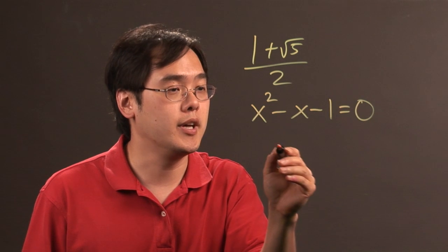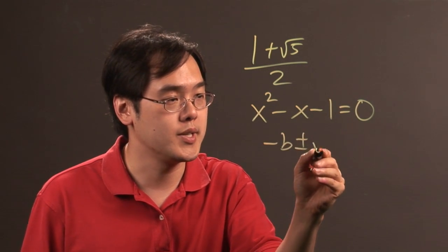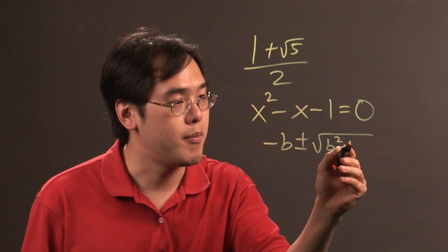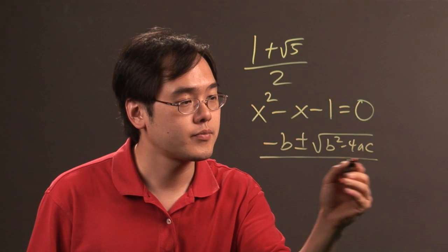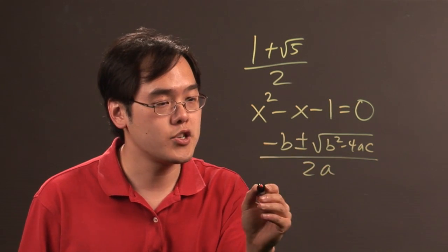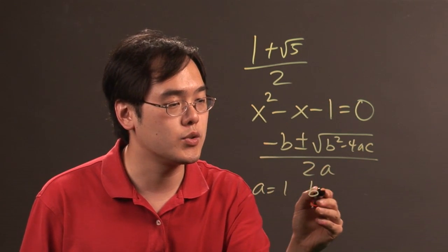Now if you plug it back into the quadratic formula, which is negative b plus or minus square root of b squared minus 4ac over 2a, as long as you let a equal 1, b equal negative 1, and c equal negative 1.